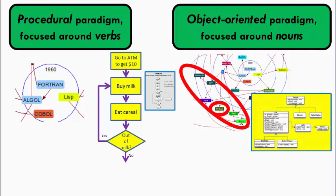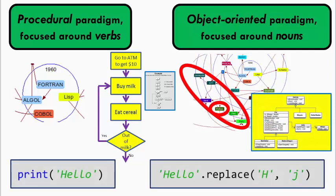Python supports both a procedural notation and an object-oriented notation. You have already seen the procedural notation, as in the print example shown here. The next pair of videos will show you the object-oriented notation, as in the example shown here, where a letter of the hello string is replaced to make hello become jello.